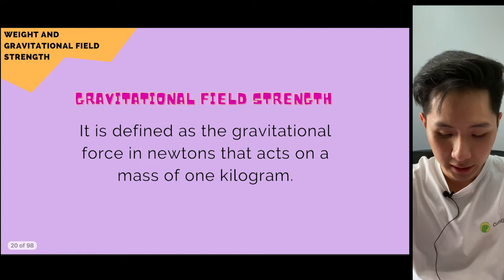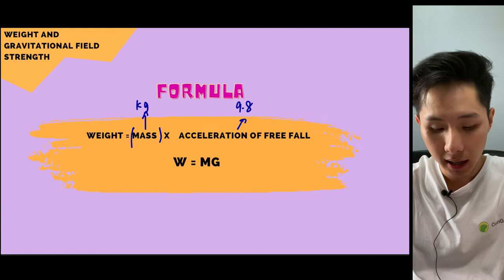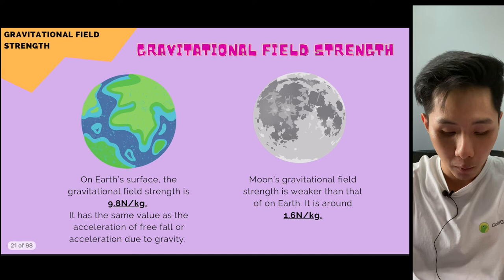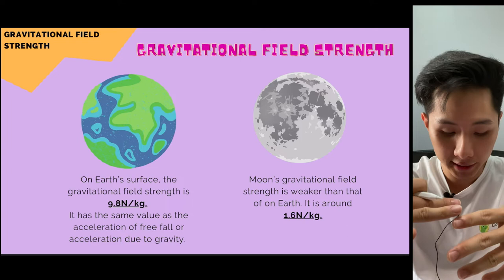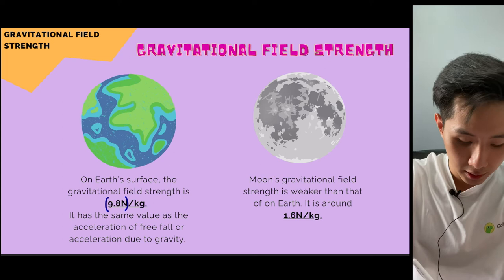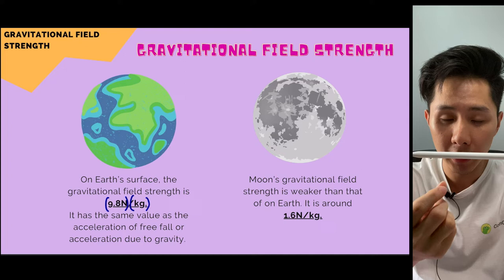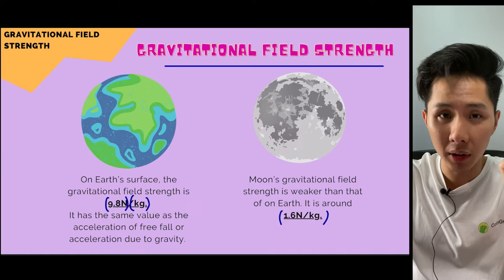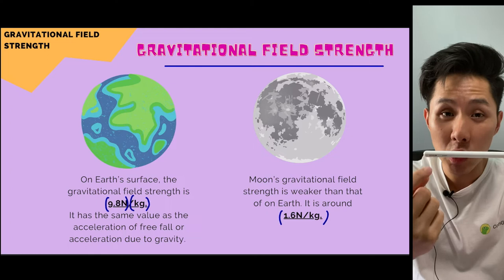We have three terms: weight, mass, and gravitational field strength. Gravitational field strength describes how much gravitational force in Newton acts on one kilogram in a certain planet. On Earth, gravity exerts 9.8 Newton per kilogram, so a 1 kg pan has 9.8 Newton pulling it down. On the Moon, the gravitational field strength is only 1.6 Newton per kilogram — so only 1.6 Newton of force pulls the pan down.